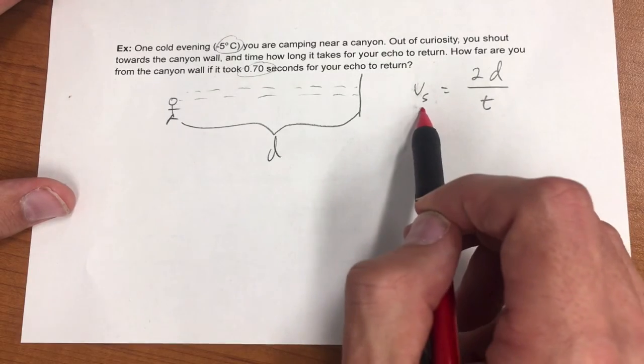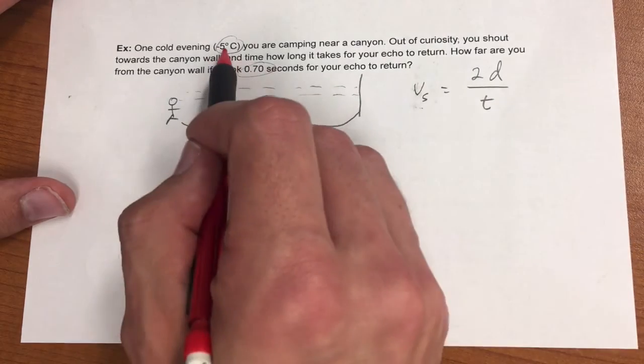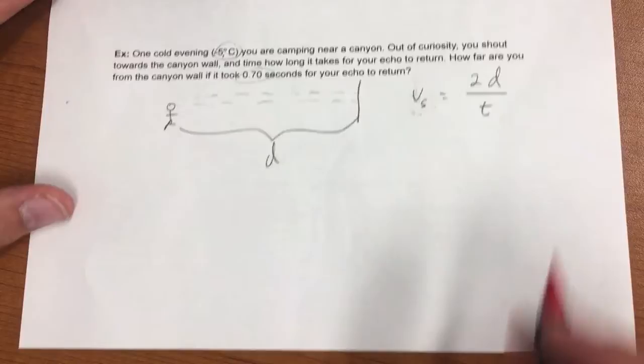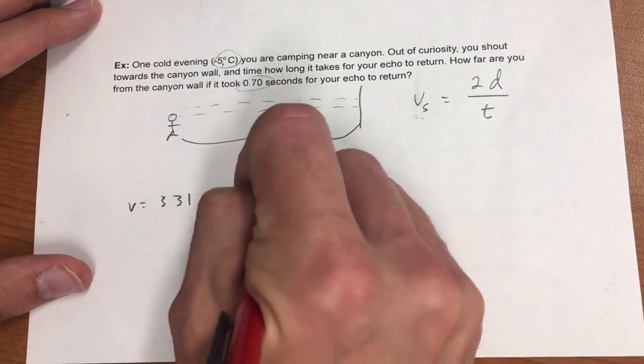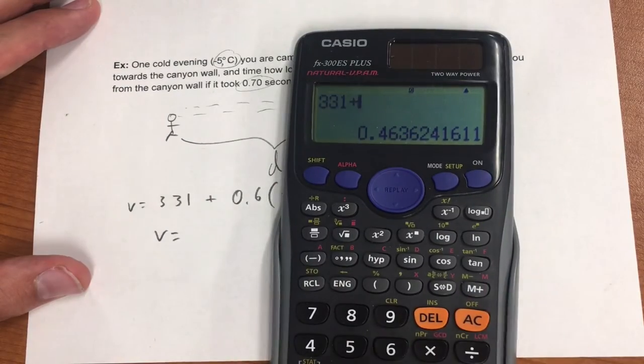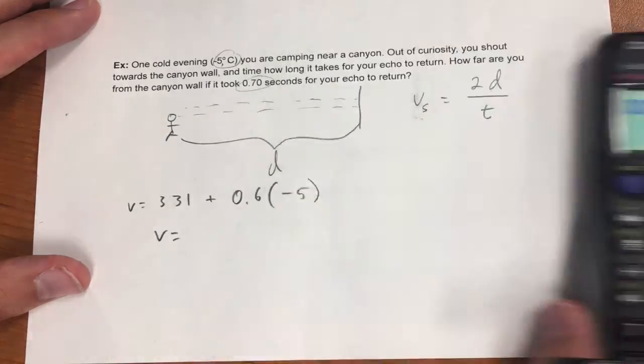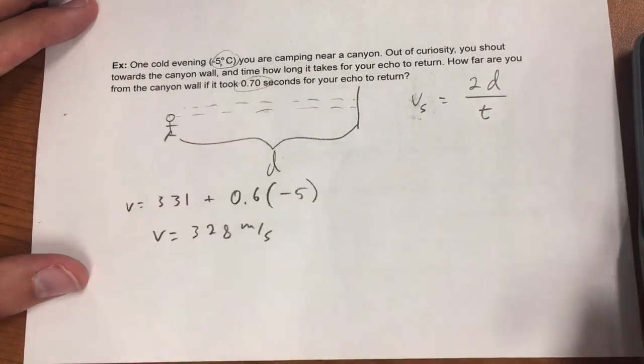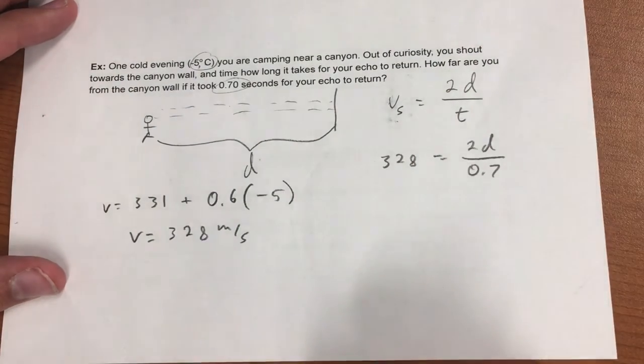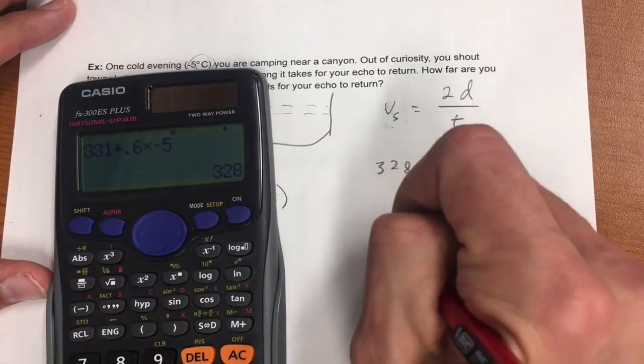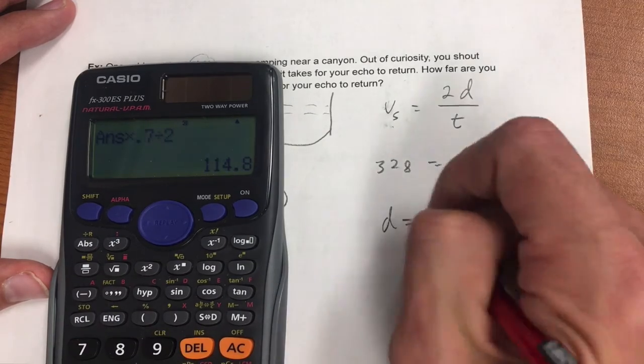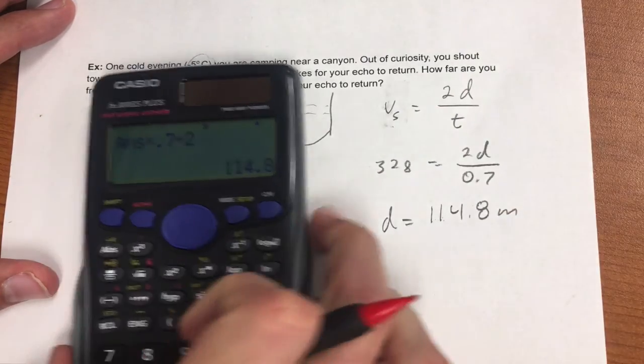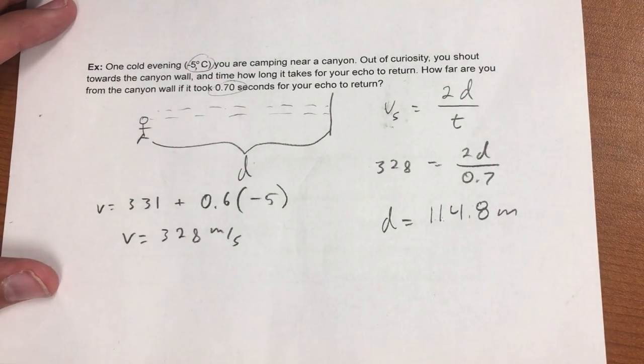First thing I'm going to do is solve for the speed of sound in this temperature air, plug in 0.7 seconds for the time and solve for d, and I get 114.8 meters.